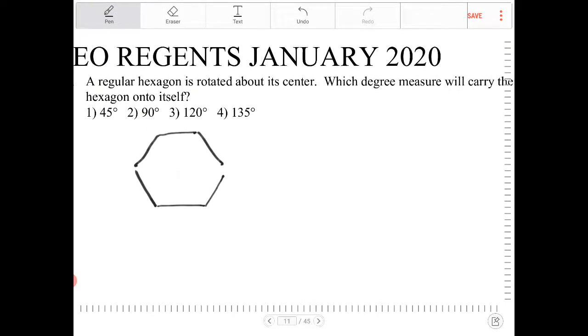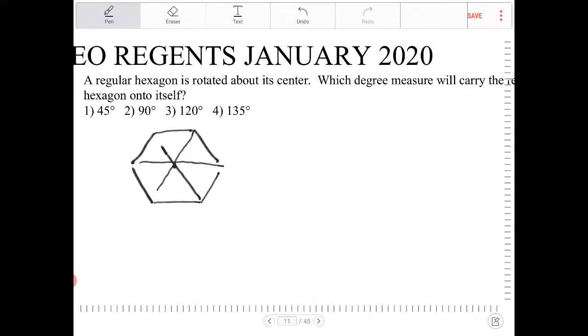When we rotate a hexagon over its center, and we want to find out the angle at which we can do that so it lands back in the same exact orientation, all we have to do is figure out that smallest angle.